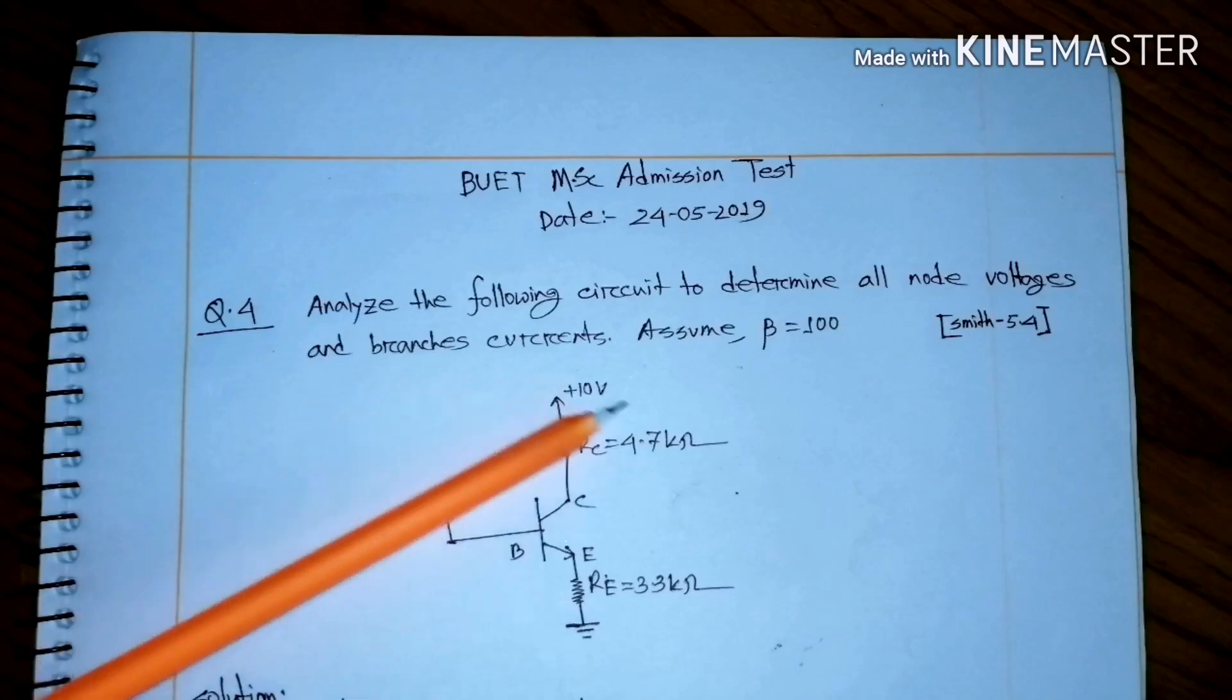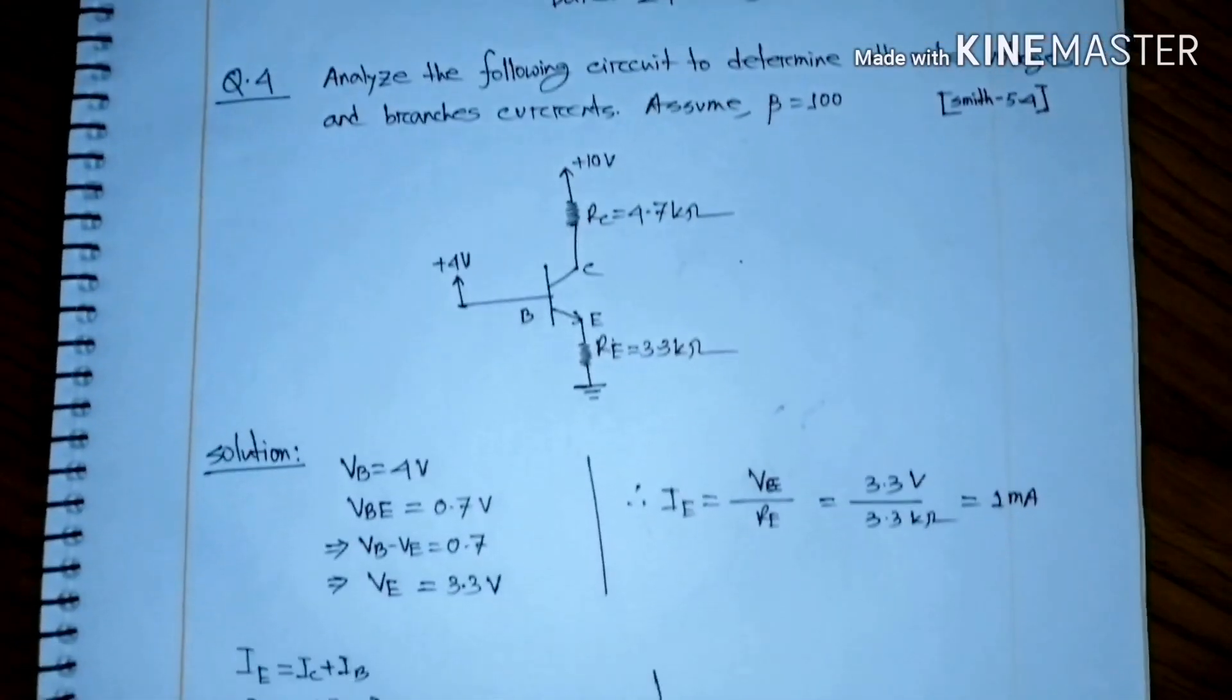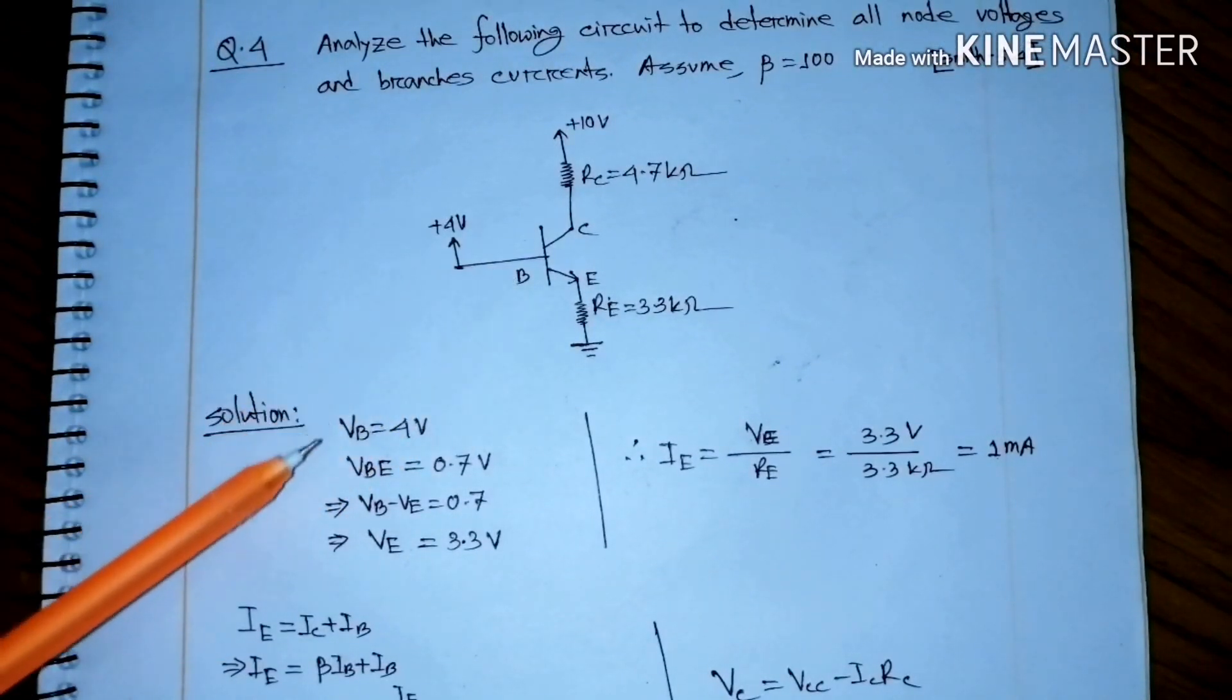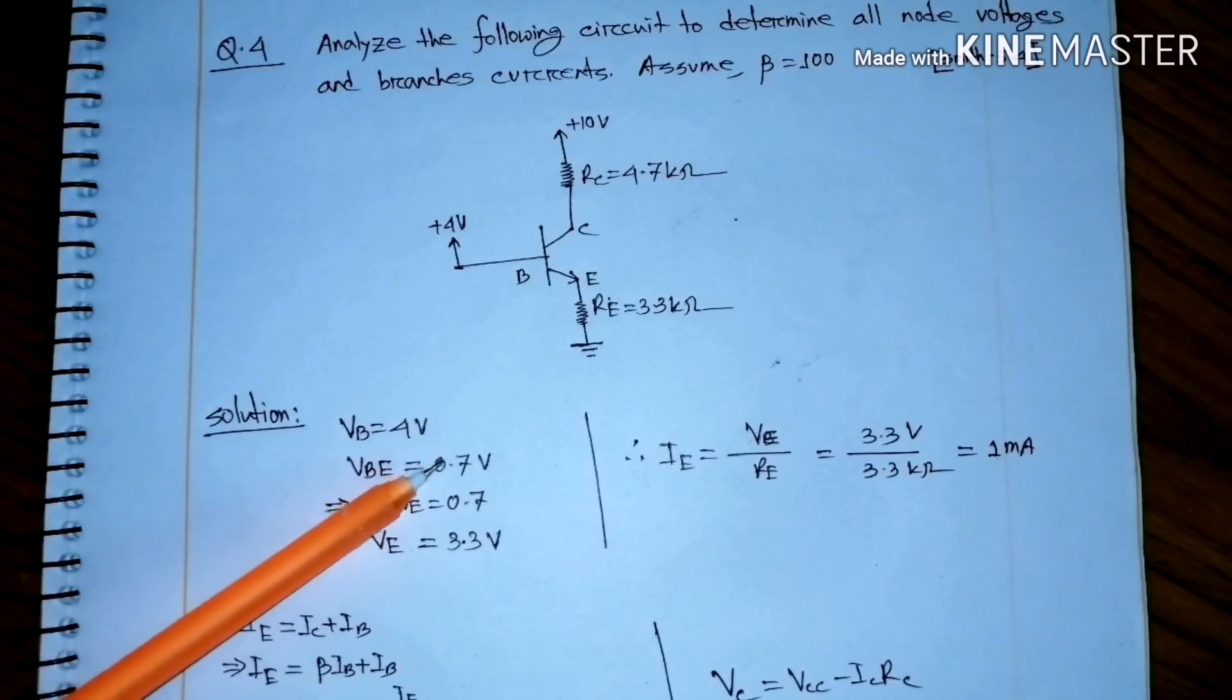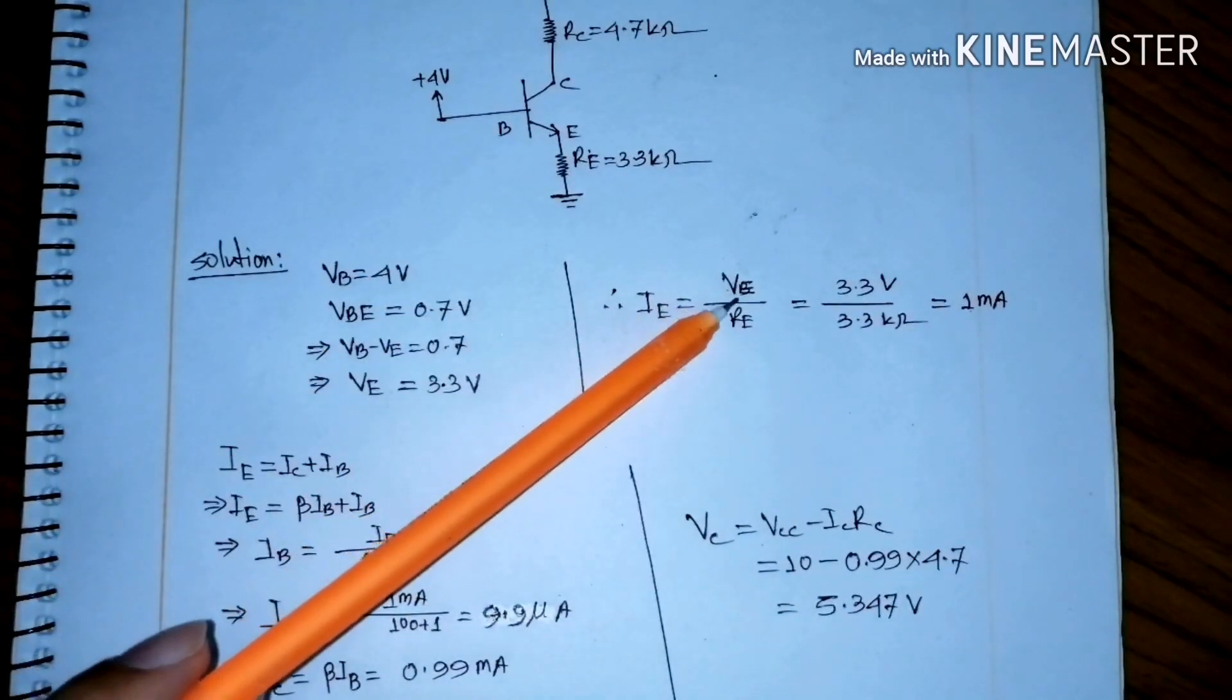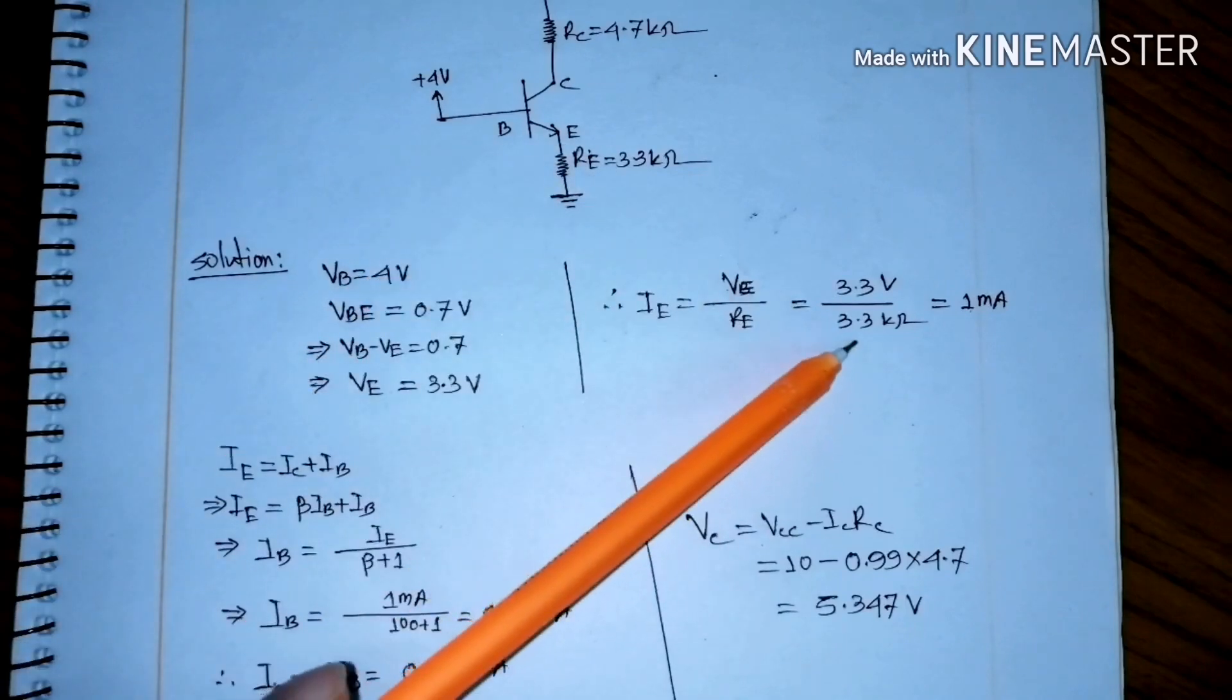It is very simple and in the active region. Now, let's look at VBE base voltage. VBE is 0.7 and VB minus VE is 3.3. Now, IE is 3.3 by 3.3.